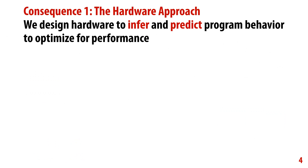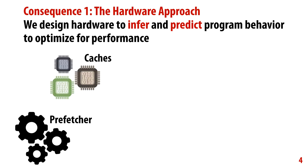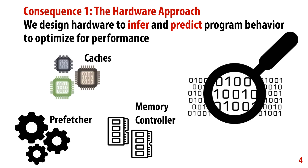These narrow abstractions have important consequences in the approaches we take to optimize for performance. First, we design hardware to infer or predict program behavior to optimize for performance. Despite a large body of research to architect different components like caches, prefetch on memory controllers, etc., to see patterns in the memory addresses that they see, this is still a very challenging task, and there's a lot of performance on the table if we didn't lose this higher-level information to begin with.